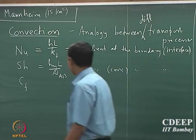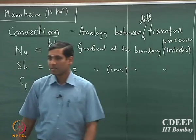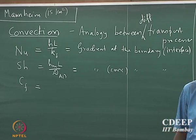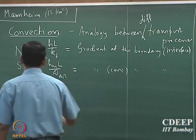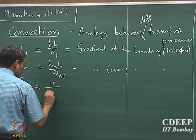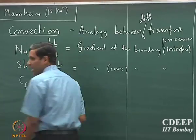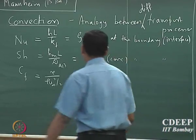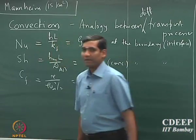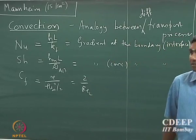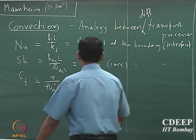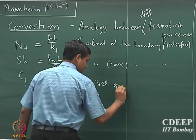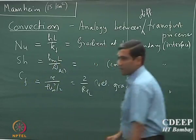What about Cf? It is tau by rho u squared by 2, and that will be 2 by Reynolds number, multiplied by the velocity gradient at the interface — which is the Nusselt number multiplied by the velocity gradient at the interface.